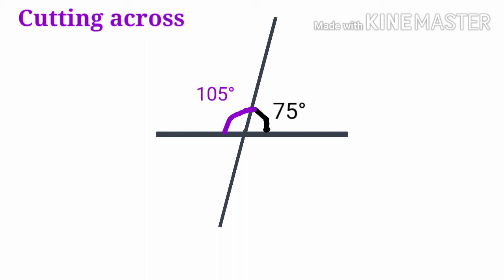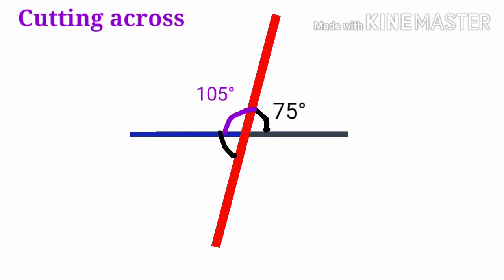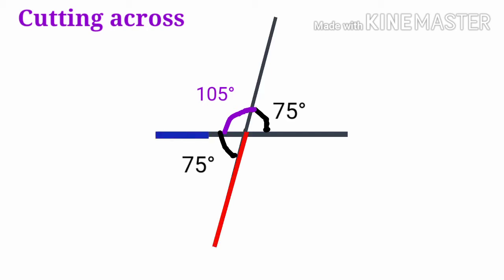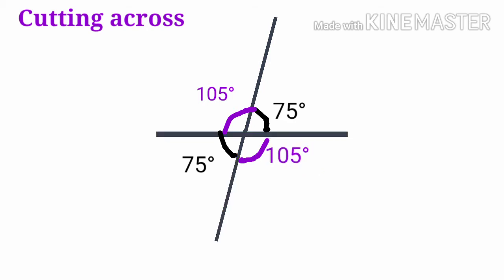This is a line drawn to another line, therefore we got another linear pair. So this angle is equal to 180 minus 105 degrees, that is equal to 75 degrees. We have a linear pair of these angles, therefore this angle is equal to 180 minus 75 degrees, that is equal to 105 degrees.